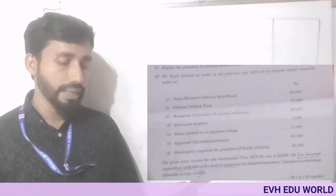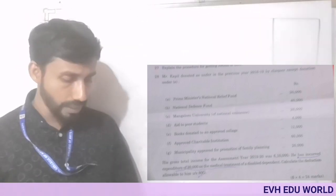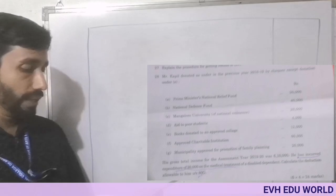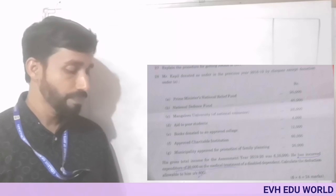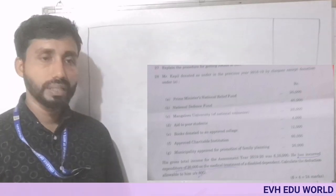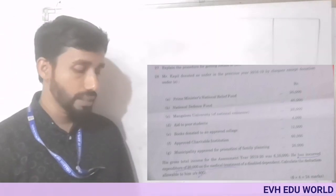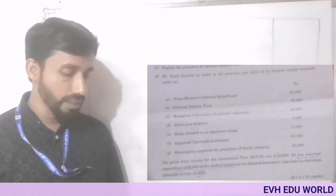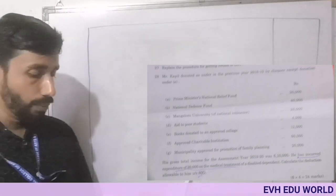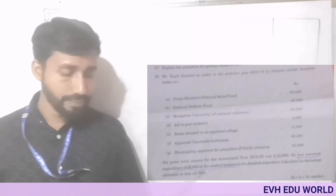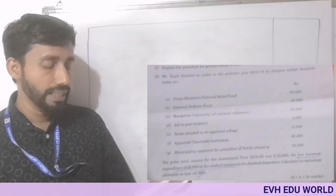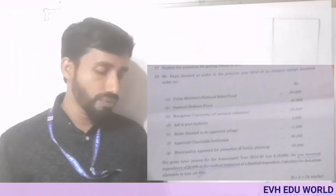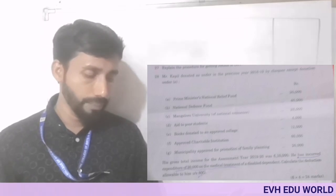Mr. Kabil donated as under in the previous year 2018-19 by cheque. The donations include: Prime Minister's National Relief Fund 20,000; National Defence Fund 40,000; Mangalore University of National Eminence 20,000; 82 poor students 4,000; books donated to an approved college 12,000; approved charitable institutions 60,000; and municipality approved for promotion of family planning 20,000. His gross total income for assessment year 2019-20 was 6,10,000. He incurred expenditure of 30,000 on medical treatment of a disabled dependent. Calculate the deductions allowable under section 80G.